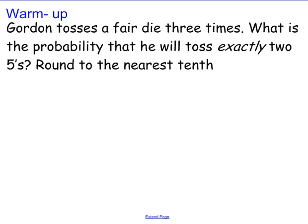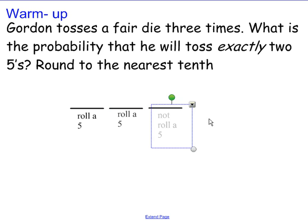Gordon tosses a fair die three times. What is the probability that he will toss exactly two fives round to the nearest tenth? So we have our three slots and we want to know what's the probability that he will roll exactly two fives. One way that could happen is if he rolls a five, rolls a five, not rolls a five. Probability of rolling a five is one out of six.